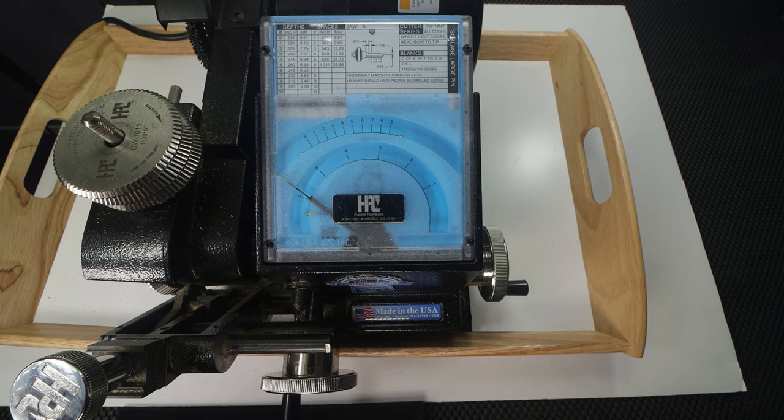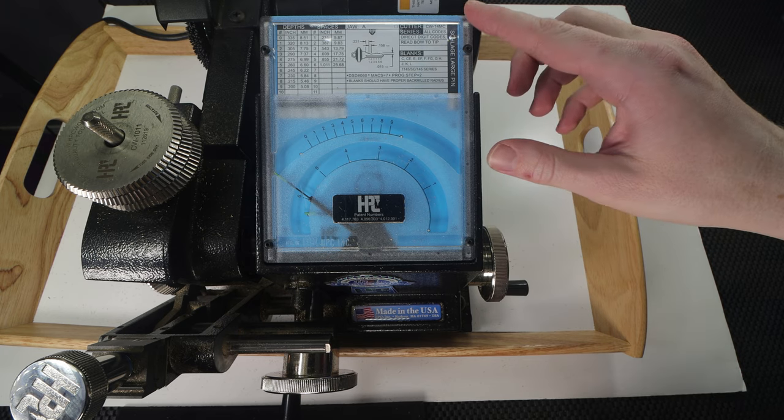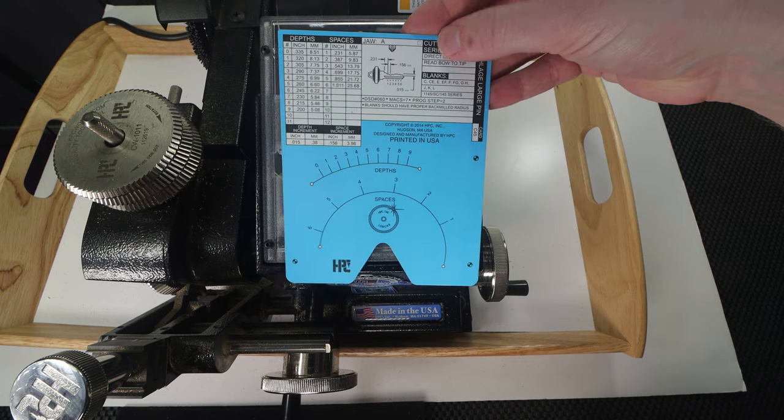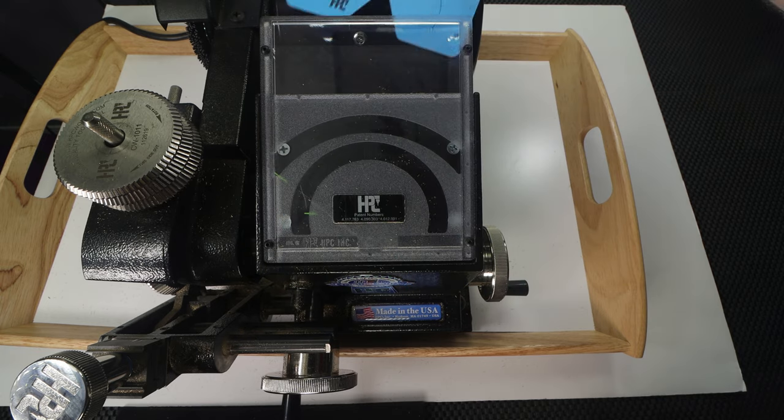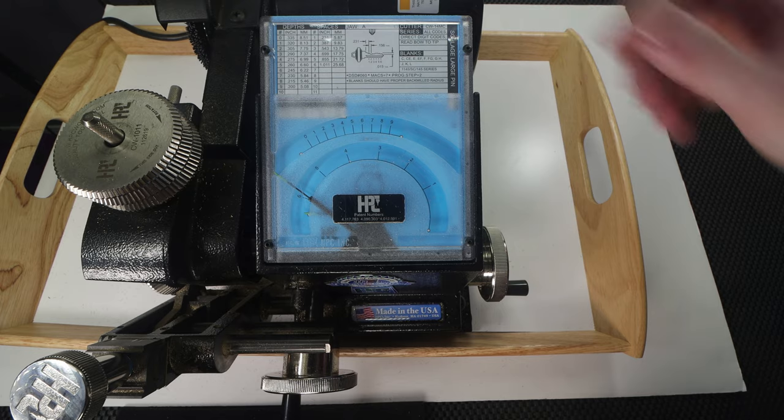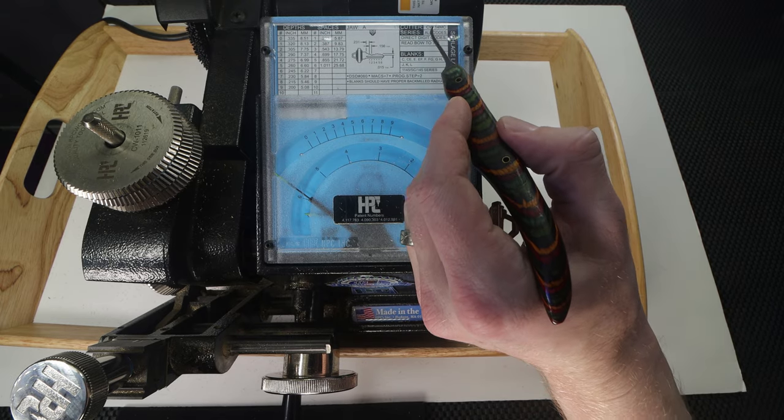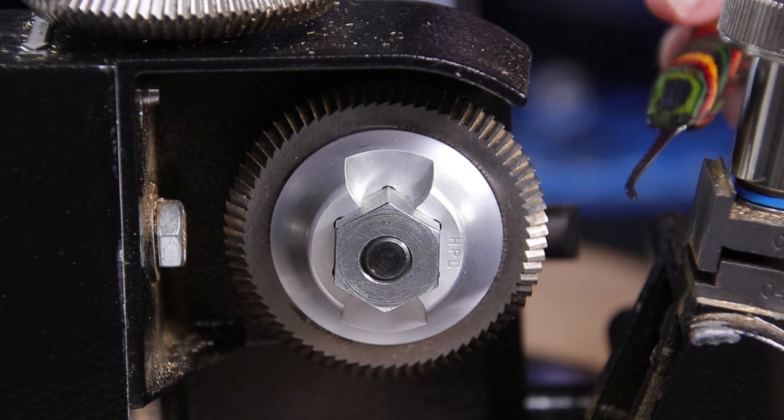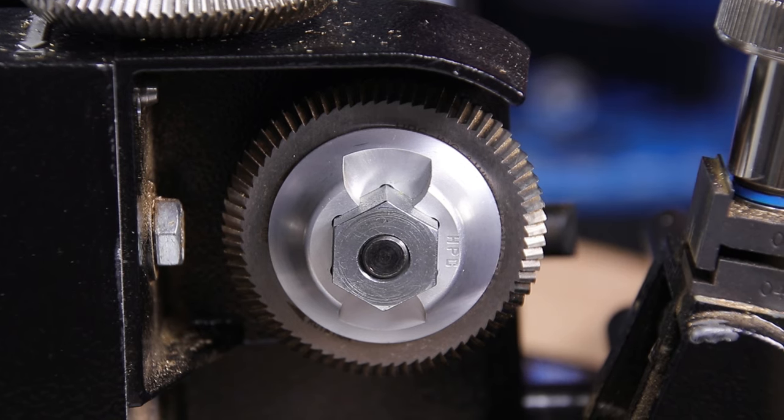So in order to get started the first thing you want to do is just make sure you really understand your machine. On my HPC machine I'm going to make sure I have the correct code card, I'm going to have my Schlage large pen card, and then you're going to want to make sure that you have the right cutter blade. I have the CW14MC installed right here, and I have the correct jaw, jaw A, installed right here.